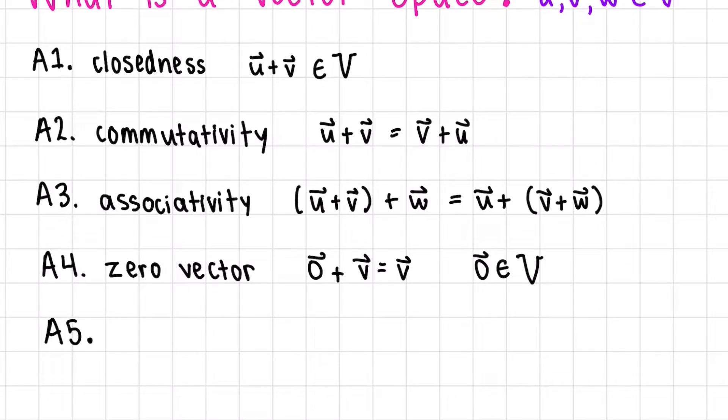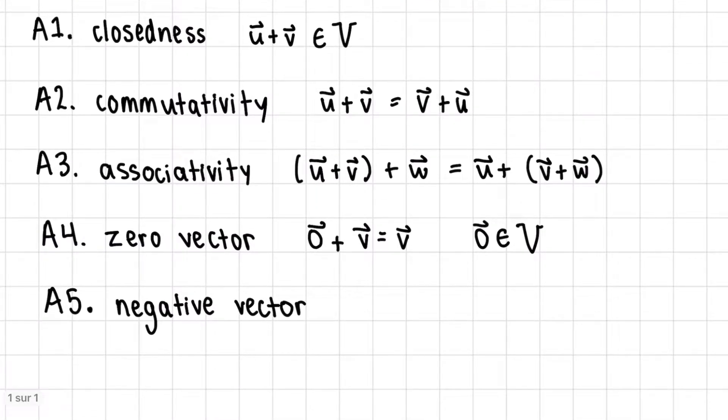And lastly, for addition, we have the negative vector. So for each vector that we have, let's take V for example, there exists a negative vector, an opposite, that when you add, for example, negative V to V, we get the zero vector.